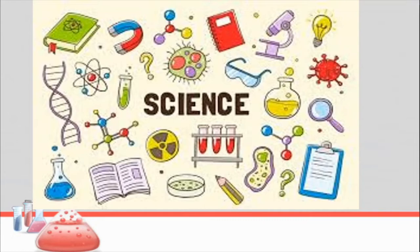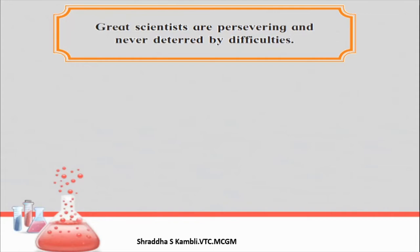In this lesson, when we read the story of the scientist, you will get a lot of knowledge about words related to science — you will develop your vocabulary in English related to science. Let us start this particular lesson by talking about these great scientists and one of their very unique qualities. The lesson in the textbook also starts with this particular quote: 'Great scientists are persevering and never deterred by difficulties.' Let us try to understand what the meaning of this particular sentence is.